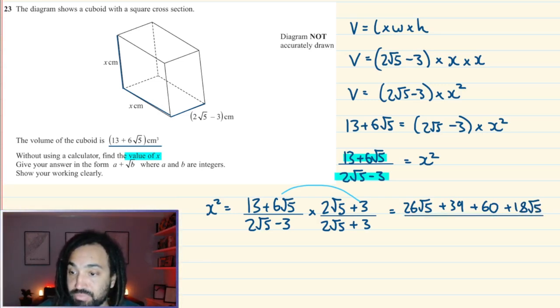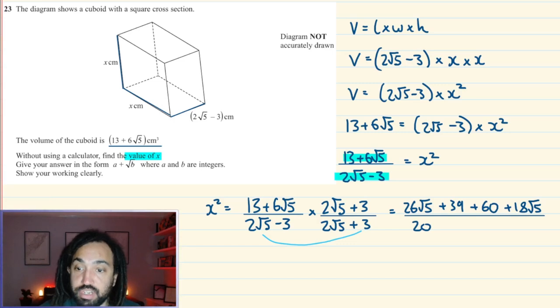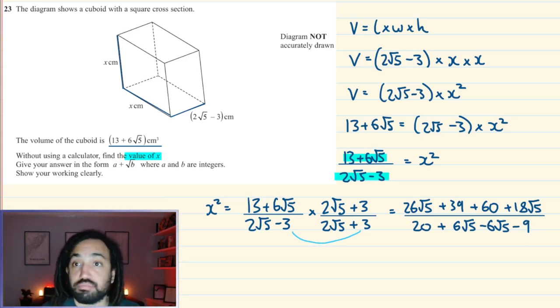And then on the bottom, there is a shortcut to do this, but I'll just do it in full, just so everyone's clear what I'm doing. So I'm going to multiply 2√5 by 2√5. Again, √5 times √5 is 5. 2 times 2 is 4, and 4 times 5 is 20. Then we're going to be doing 2√5 multiplied by 3, which is going to give us plus 6√5. And then the next term will be minus 6√5, because we're going to be doing minus 3 times 2√5. And then the final term will be minus 3 multiplied by 3, which is minus 9.